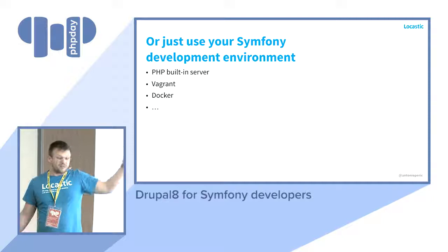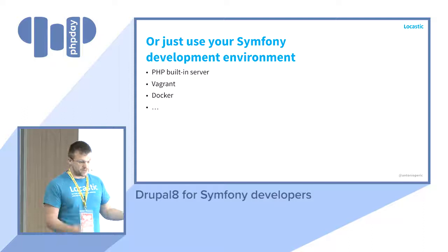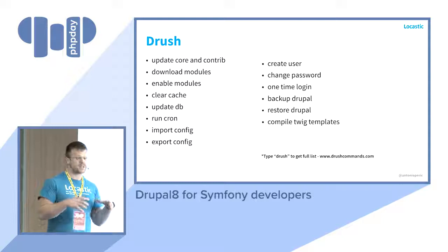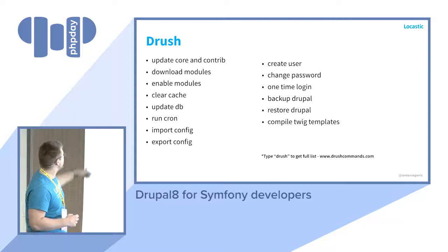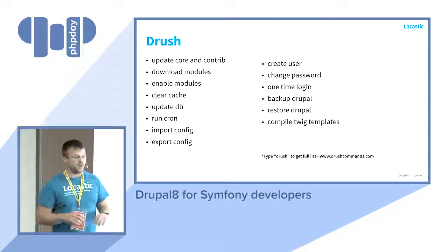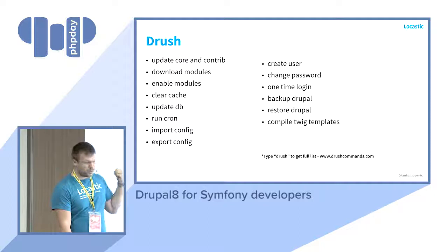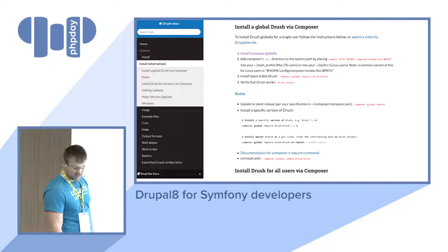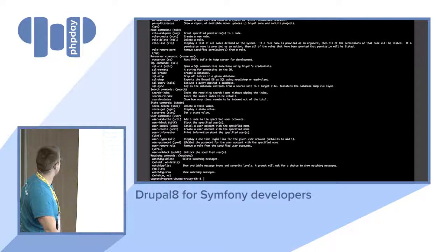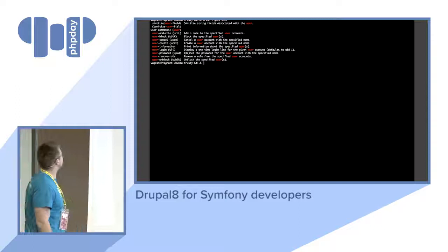Drupal has useful console tools, like Symfony. The first is Drush — a system management tool. With Drush you can update core, download and enable modules, clear cache, update the database, import/export config, deploy to server, and back up Drupal. It's a very powerful tool. You can install it with Composer globally, then in the console run 'drush list' to get all available commands. For example, 'drush user' returns all user-related commands like add role, block, cancel, create, login, and password.